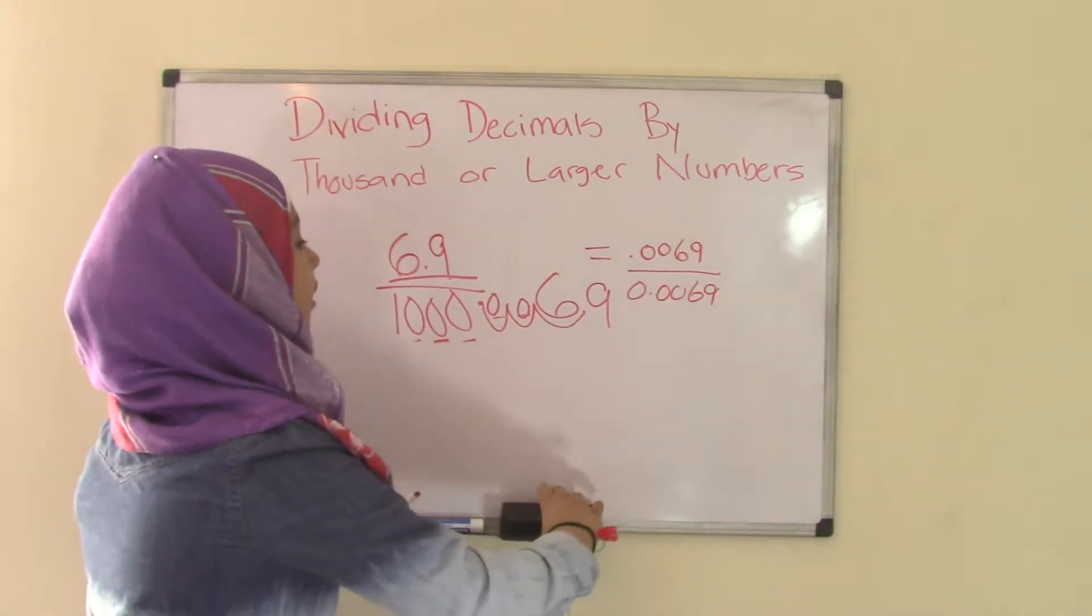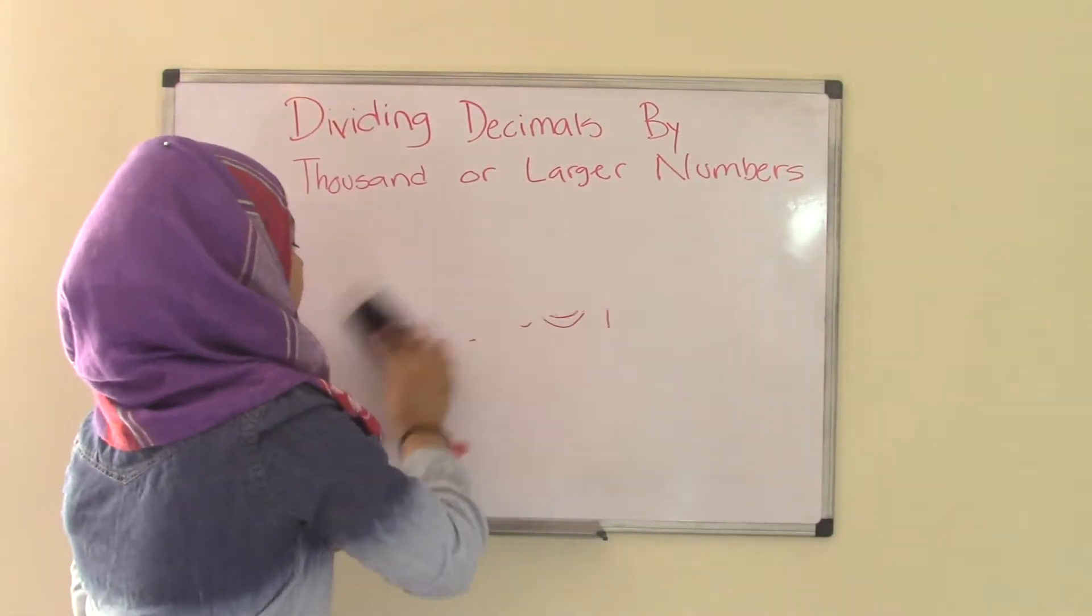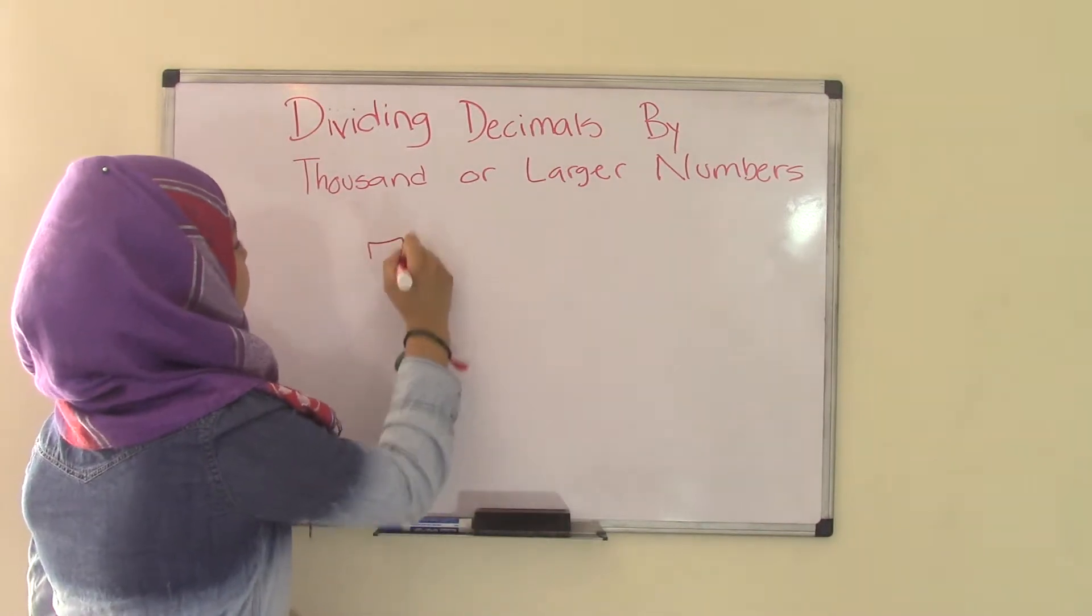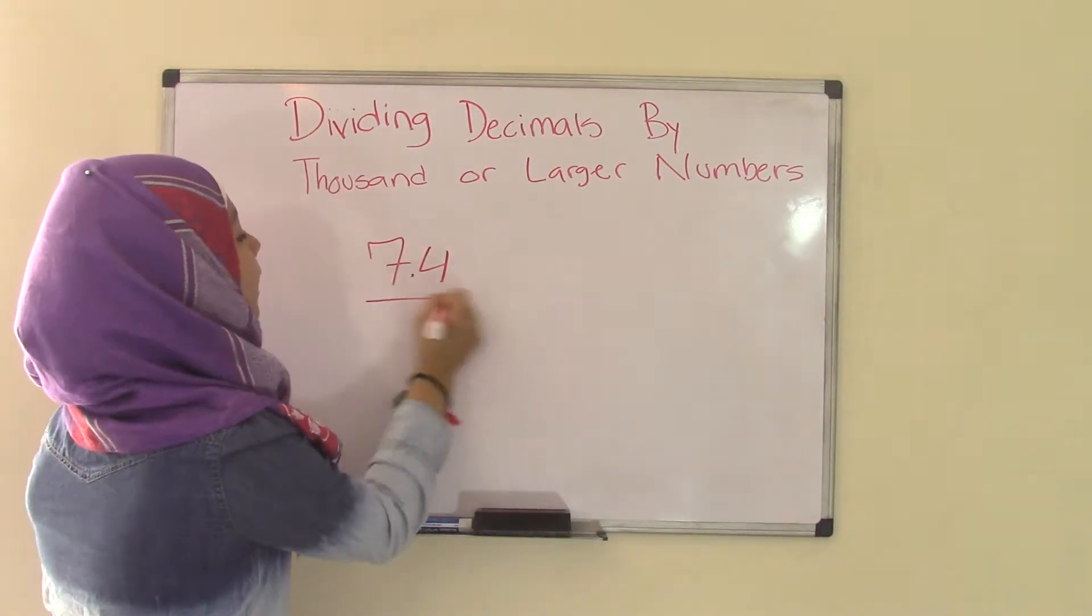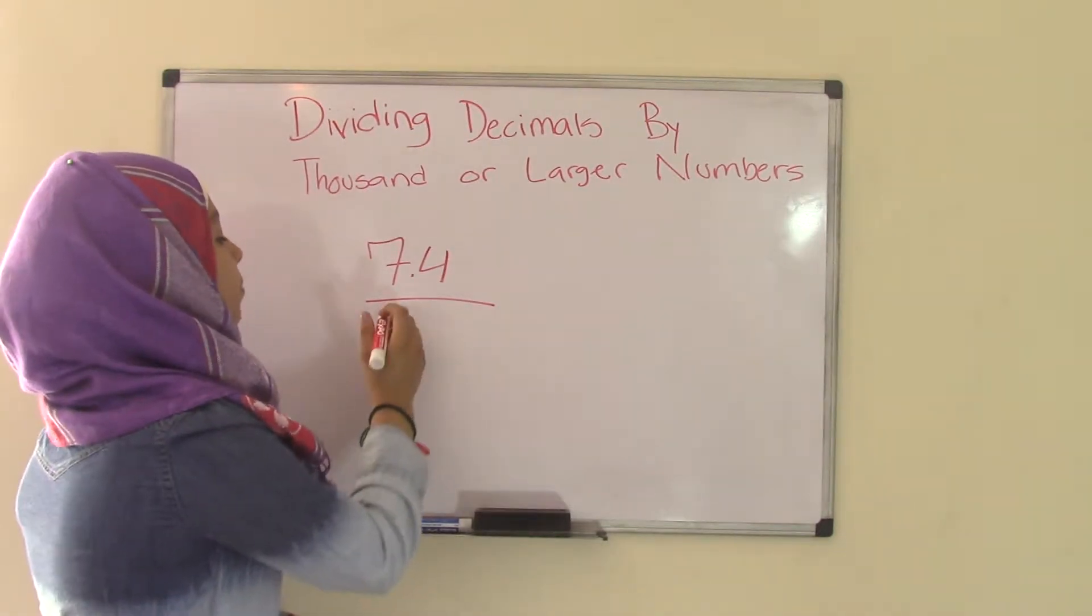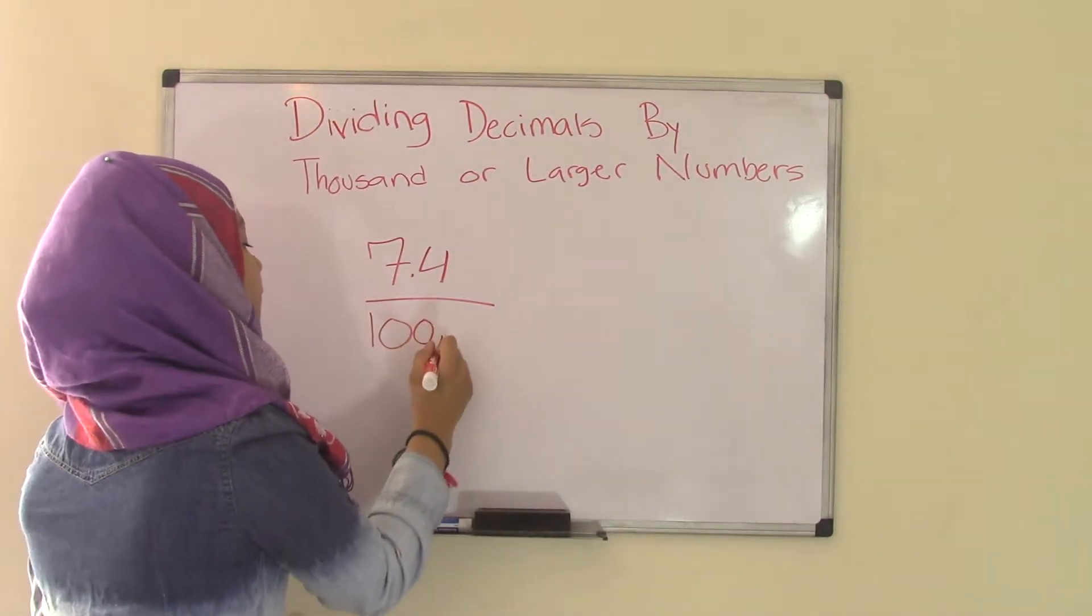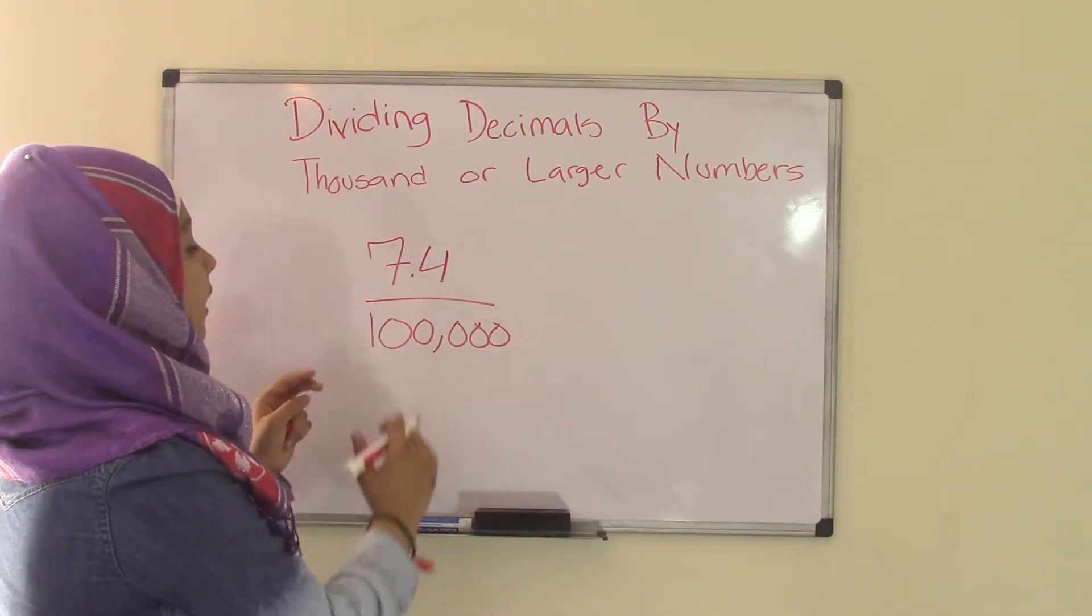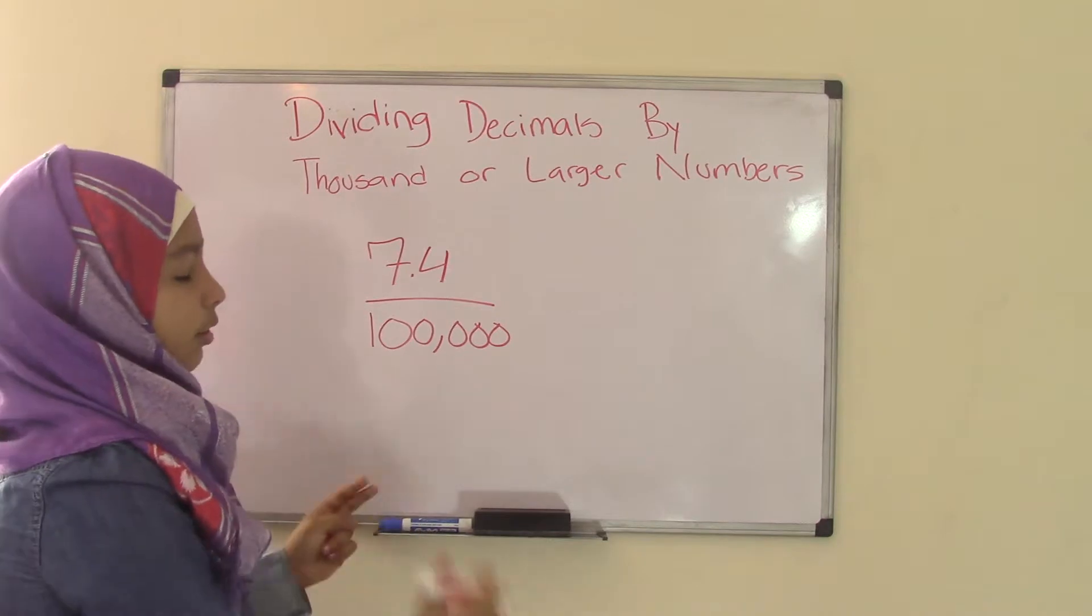How about if we had a larger number? Like maybe the decimal could be 7.4. And this time, rather than dividing it by 1,000, maybe you could try by 100,000. Now as you can see, as I'm going, the numbers on the tens, hundreds, thousands, they're getting larger.